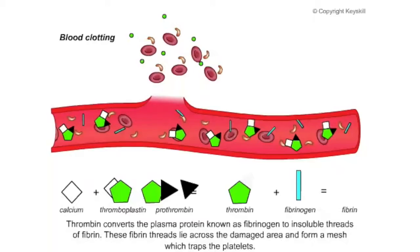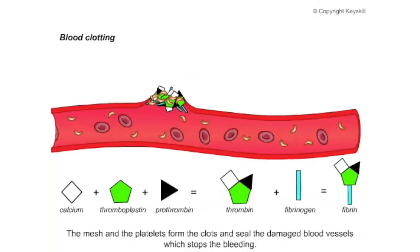The fibrin threads lie across the damaged area and form a mesh which traps the platelets. The mesh and the platelets form the clot and seal the damaged blood vessels, stopping the bleeding.